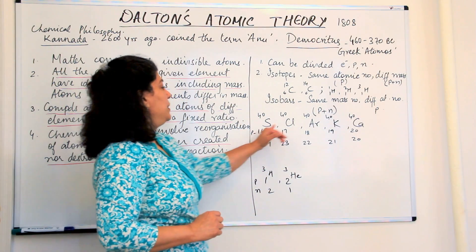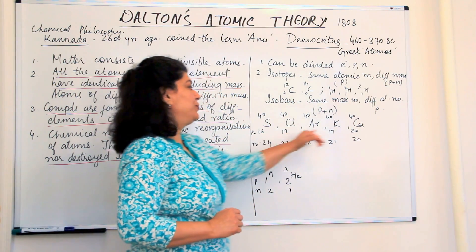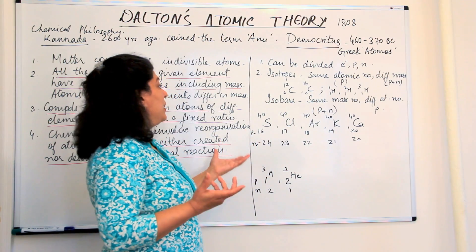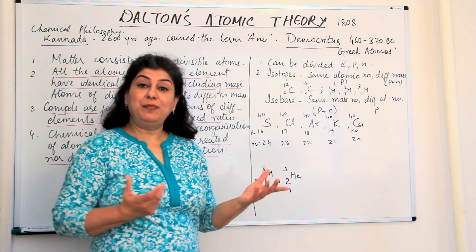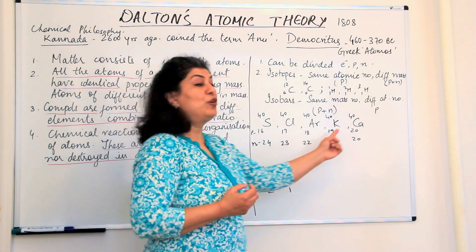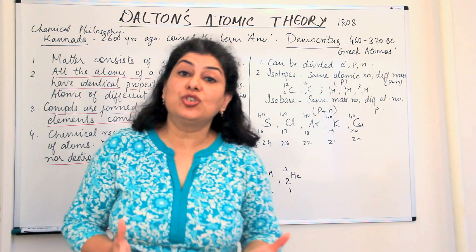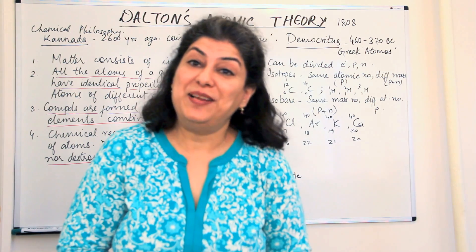So how are all of these isotopes of different elements? How are they isobars? Because all of them have a mass of 40. And why are they different elements? Because each one has different number of protons, and it is the protons which are the identity of an element.